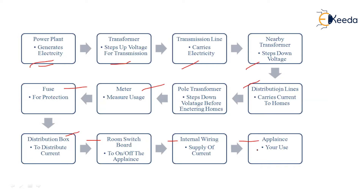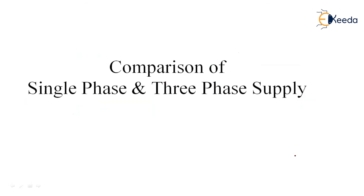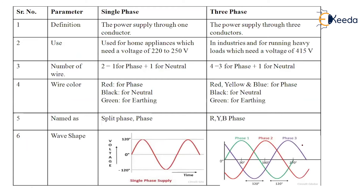The internal wiring supplies current to the appliances we actually use: our charger point, lighting, air conditioning, and so on. This was the complete schematic flow of electricity from the power plant all the way to our end use. Now let us compare and understand what is single phase and three phase supply.